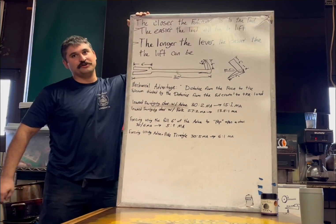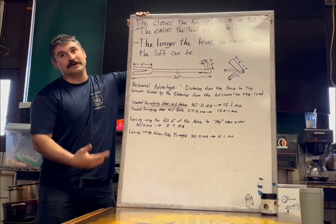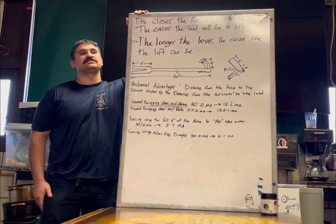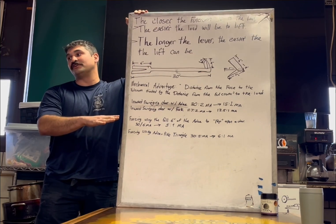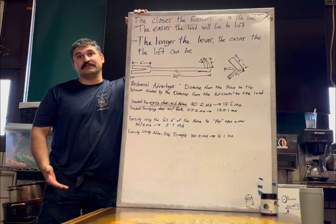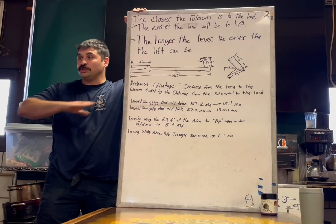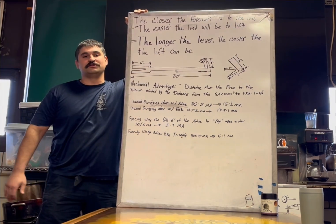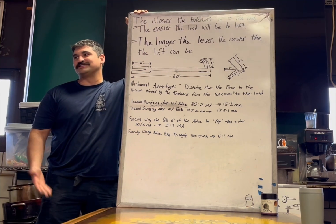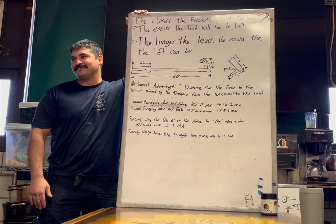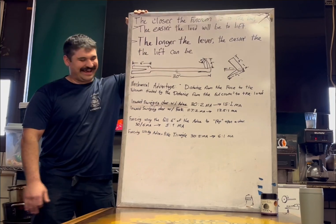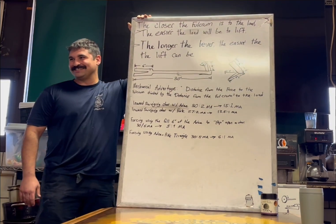The closer the fulcrum is to the load, the easier the lift will be. The longer the lever, the easier the lift can be. So if we have a super long lever, let's say a whole team of fat kids are on one side of a seesaw. If we put that fulcrum real close, it might be really heavy to lift that. But if we get a really long lever, we can push down on that lever and it should be easy. What was that one saying? Give me a long enough lever and a fulcrum to put it on, I can move the world. Archimedes? That's smart. That's why you're here.